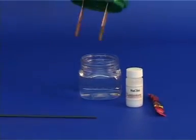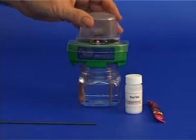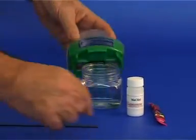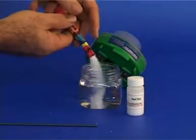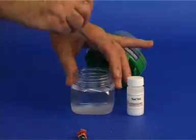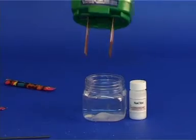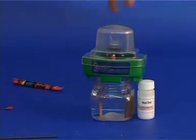First we will measure the conductivity of tap water. Observe that the bulb does not light up. Next, let us mix in the sugar and measure the conductivity. Observe that there is no change from the tap water.